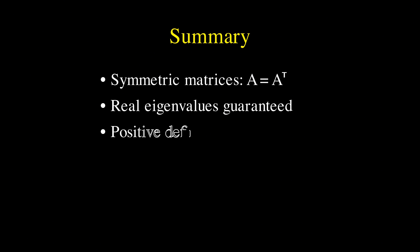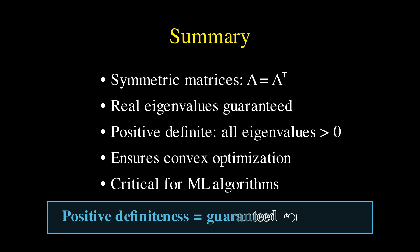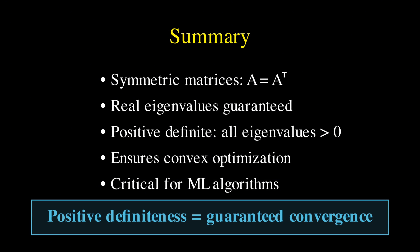So let's summarize what we have learned. Symmetric matrices are those that equal their own transpose, creating a mirror symmetry across the main diagonal. They always have real eigenvalues, which is crucial for many applications. A matrix is positive definite when all its eigenvalues are strictly positive, or equivalently when the quadratic form is always positive for non-zero vectors. This property ensures that optimization problems are convex, guaranteeing that gradient descent and related algorithms will find a global minimum. And this entire framework is crucial through machine learning, from linear regression to deep learning, because positive defineness gives us the guarantee of convergence that makes these algorithms work reliably in practice.